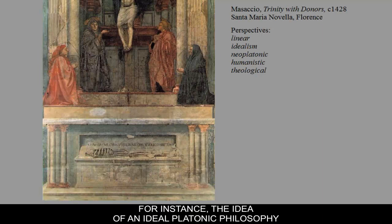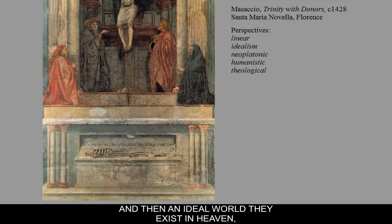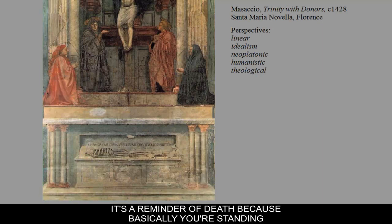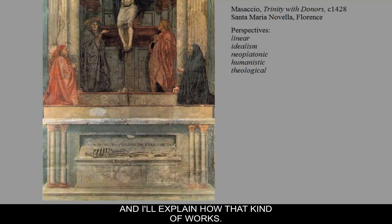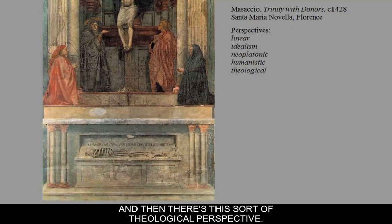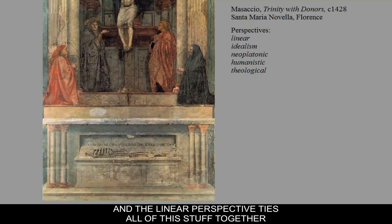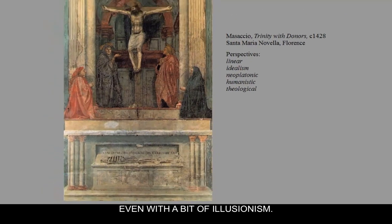All these things tie in with different perspectives — for instance, the idea of Neoplatonic philosophy that there's a better world in heaven, that an ideal world exists there while this one isn't so good. It's also a type of memento mori, a reminder of death, because you're standing right where that skeleton is. The figure of Jesus is idealized to look like a Greek god, and the linear perspective ties all this together with a degree of illusionism.